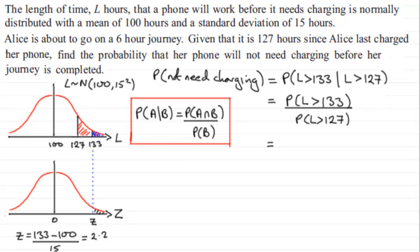The 127, we worked that out in the previous part. We worked out the probability of being more than 127. But for this one, probability L is greater than 133, that's the same as the probability of Z being greater than 2.2. And we'll divide that by the probability of L being greater than 127. So the probability of Z being greater than 2.2 is going to be 1 minus the probability that Z is less than 2.2.